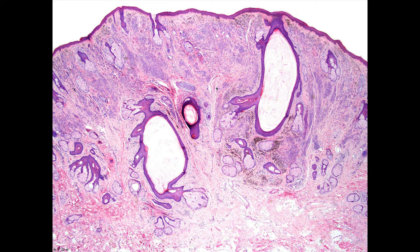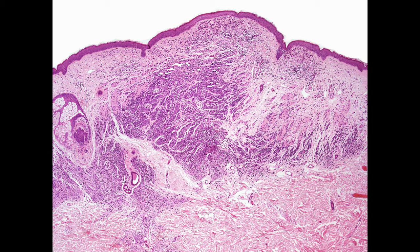Here's a strange one: a totally dermal nevus with some residual type A cells at the top, mostly type B cells, and spindle type C cells at the bottom. But overlying the type B cells at the top there are areas of neurotization — you could call this an inverted type C nevus. This is just a histological curiosity and is of no consequence to the patient.